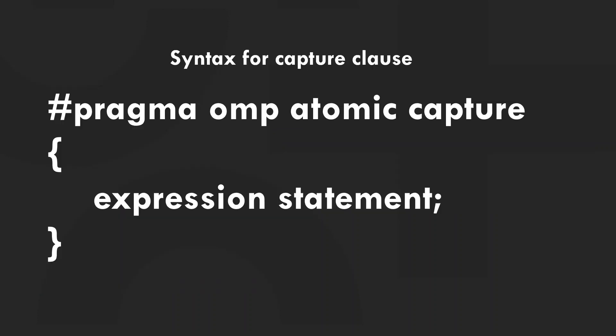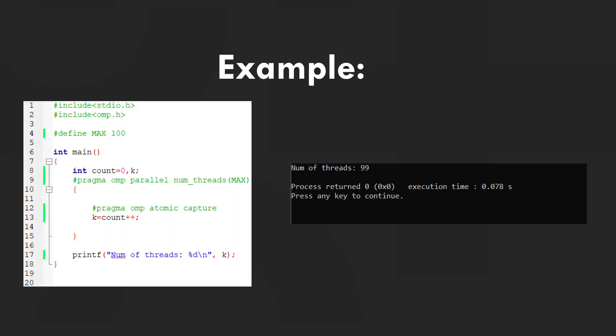This is the syntax for the capture clause. It updates the value of a variable while capturing the original or final value of the variable atomically. In this example, I have defined max to be 100, initialized count to 0, and used #pragma OMP parallel num_threads max, inside which I incremented count and assigned it to variable k. The capture clause updates the value while capturing the original or final value atomically, returning 99 in this case.